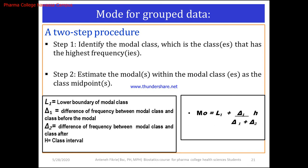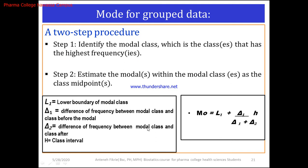For grouped data, we need to follow the same two-step procedure as for the median. First, identify the modal class — the class that has the highest frequency. For example, if frequencies are 3, 12, and 23, then 23 is the most frequent one, so the mode is found in that class interval.